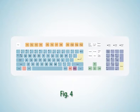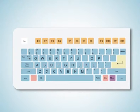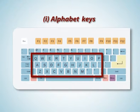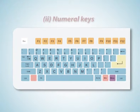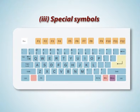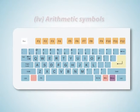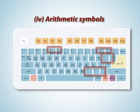We will now discuss its layout as shown in figure 4. The main cluster has the following types of keys: 1. Alphabet keys, A to Z, used in lower and upper case. 2. Numeral keys 0 to 9. 3. Special symbols such as exclamation mark, tilde, hash, caret, ampersand, and reverse slash. 4. Arithmetic symbols such as minus, plus, oblique, star, less than, greater than, percentage, dollar, parenthesis, and brackets.